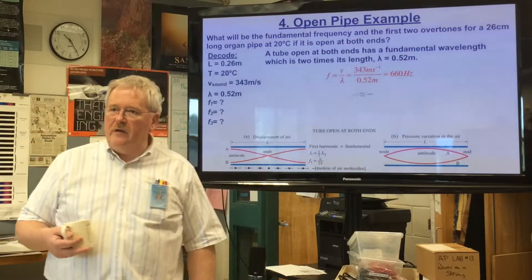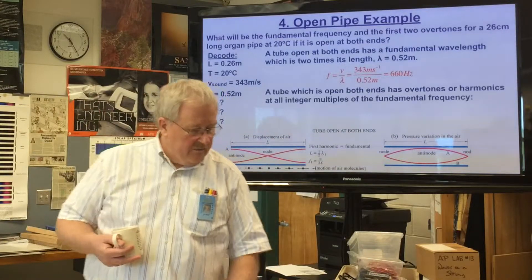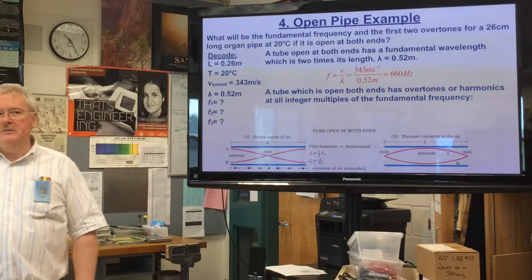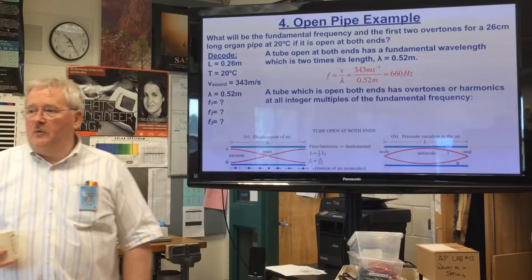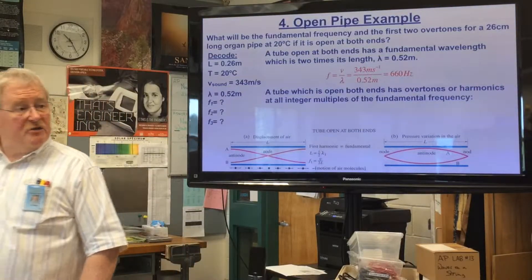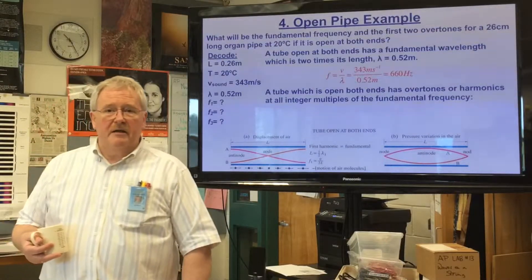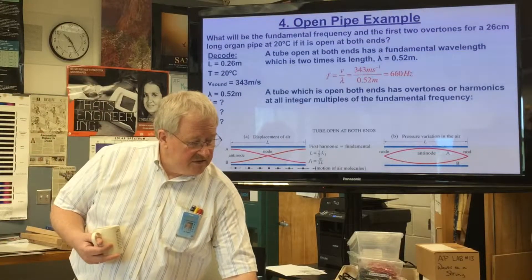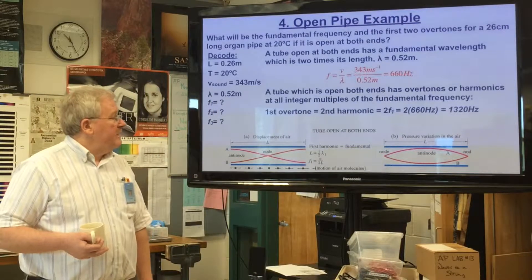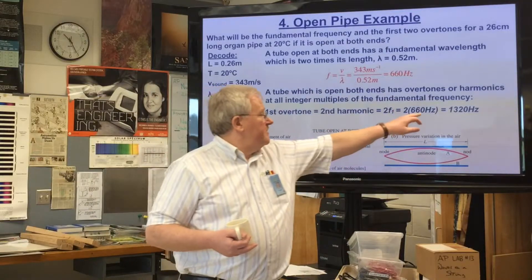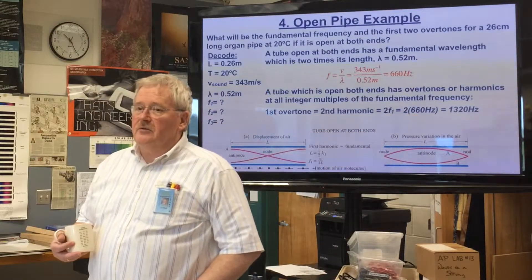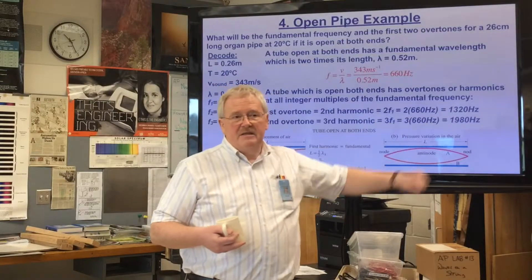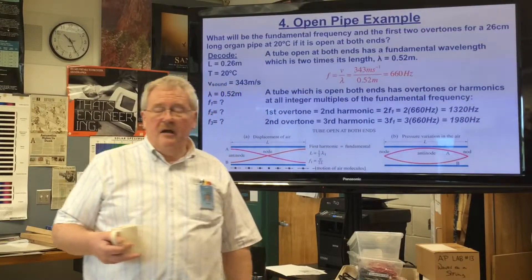Rather than repeat that calculation, a tube open at both ends has overtones at all integer multiples of the fundamental frequency. The second harmonic is 2 × 660 = 1320 Hz. The third harmonic is 3 × 660 = 980 Hz.